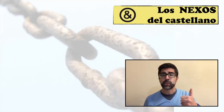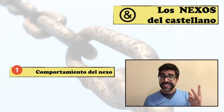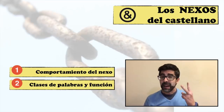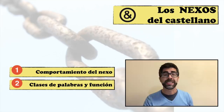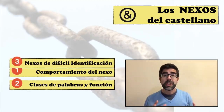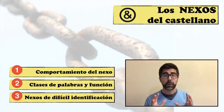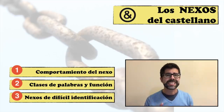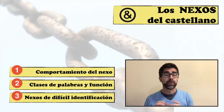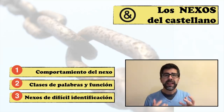What is the Nexo and how it works? What kinds of words perform this function? And at the same time, what other functions can they perform, as well as the Nexo? And finally, I'm going to focus on tricks or strategies that serve to differentiate two groups of Nexos that usually generate quite a lot of confusion when they get mixed up.